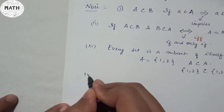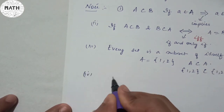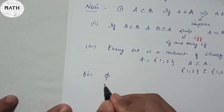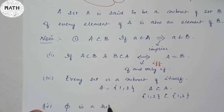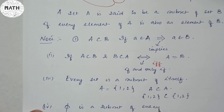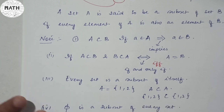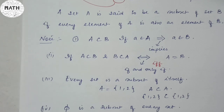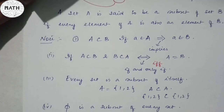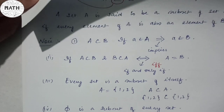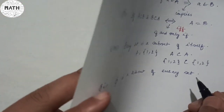Then comes point number four, which is very important: phi, that's an empty set, is a subset of every set. The empty set is a subset of every set.